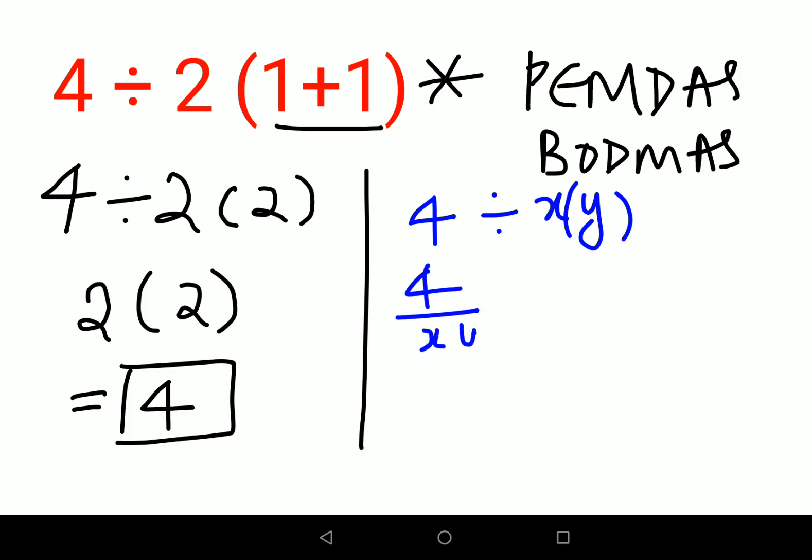So in this case also, what you would have done is 4 upon 2 into 2, that gets you the answer as 1. Now when they came across this kind of situation where there was a discrepancy—they got the answer 4 and then they got the answer as 1—the precedence got introduced.